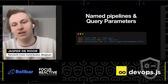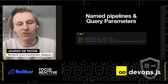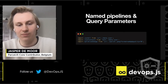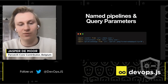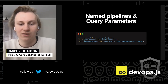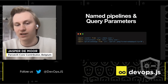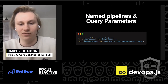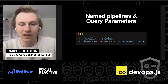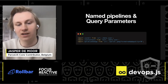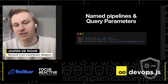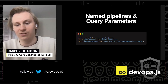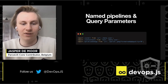We've also introduced named pipelines and query parameters, which is very useful if you want data or JavaScript in different formats. For example, with JSON imports, in one case you might want a URL of the JSON file, and in another case you might want the text content of the JSON file. You can do that with named pipelines — for example, URL:data.json will return a URL to the JSON file, and text:data.json will return the contents of that JSON file.